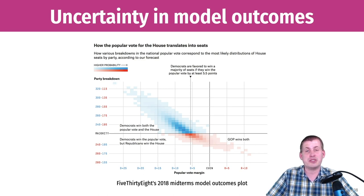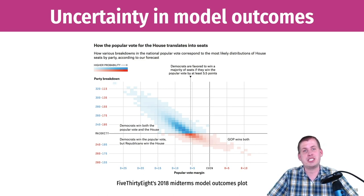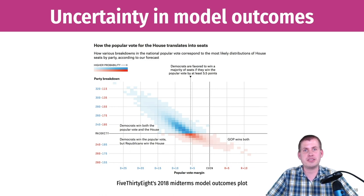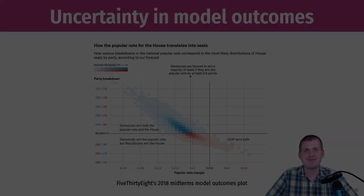That was a whirlwind tour of different ways to look at uncertainty in single variables, multiple variables, regression models, and simulations. Head to the lesson, example, and assignment for today to get practice making these things and communicating uncertainty.